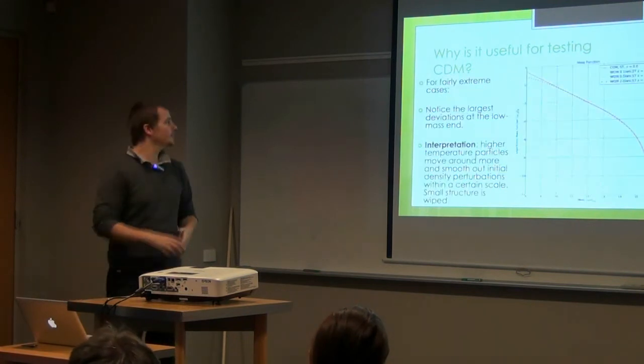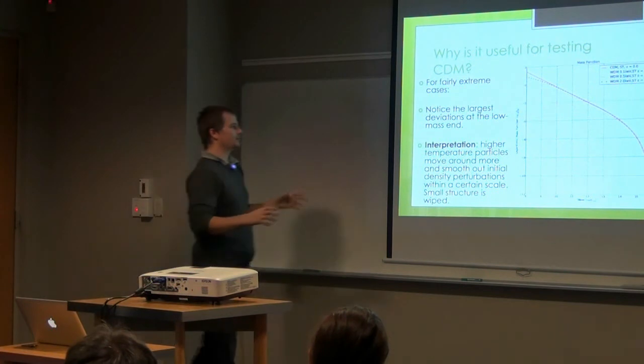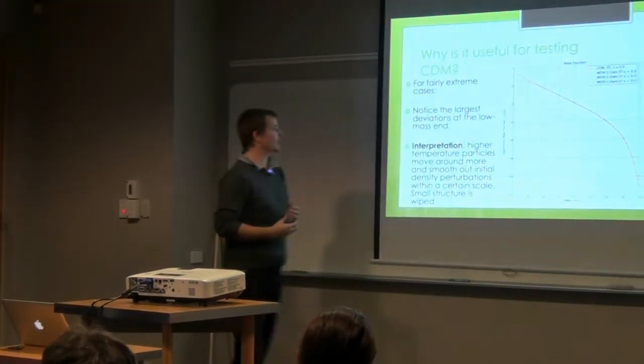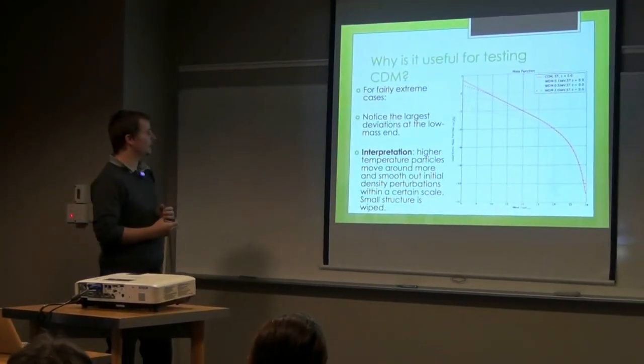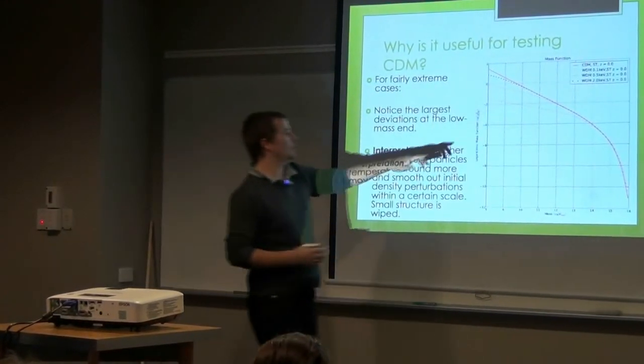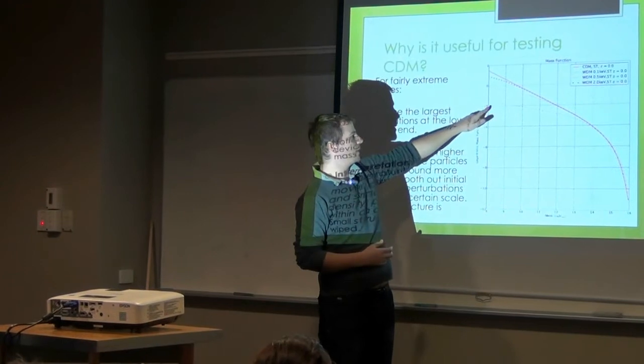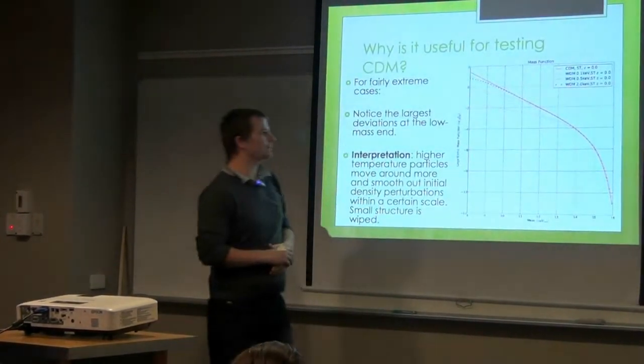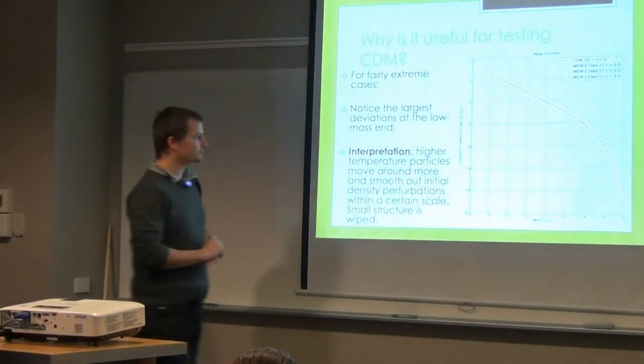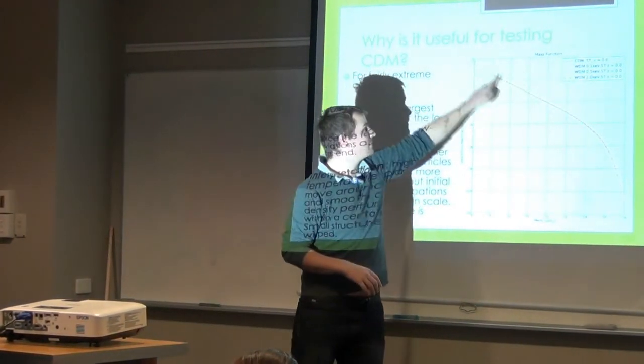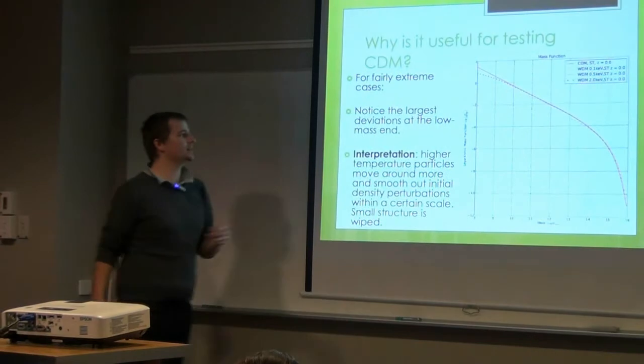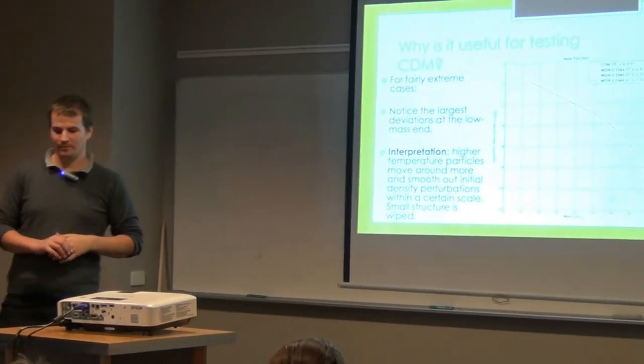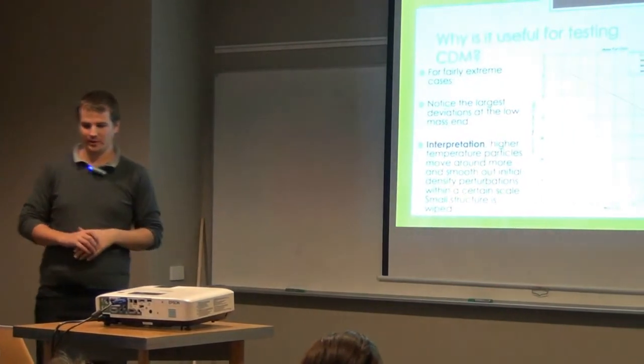And this looks like this. So this is, I guess, fairly extreme cases, especially these guys. I plotted this a couple of weeks ago. So here we've got warm dark matter at 0.1 kiloelectron volts. That's at a redshift of zero. And this is the cold dark matter model here. But you can see the biggest deviation is at the low mass end. And this is kind of a problem for measuring it, which we'll go into in a sec.